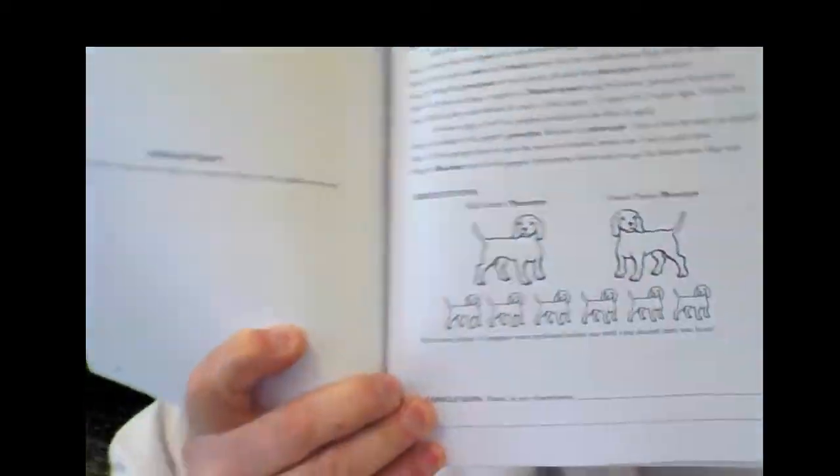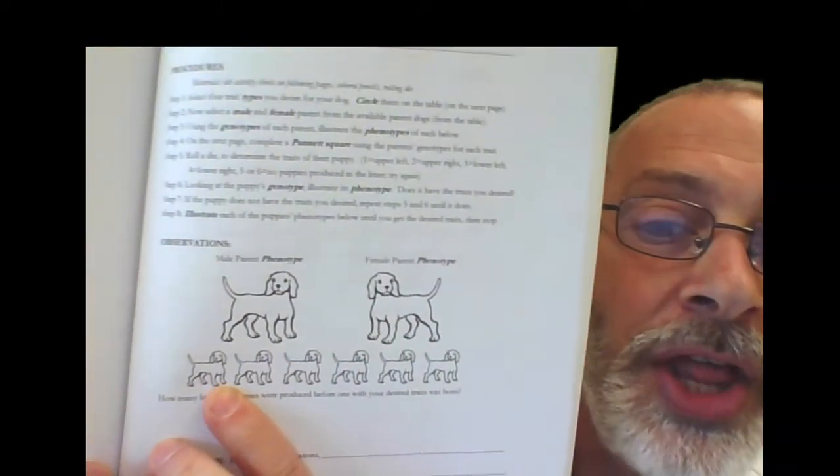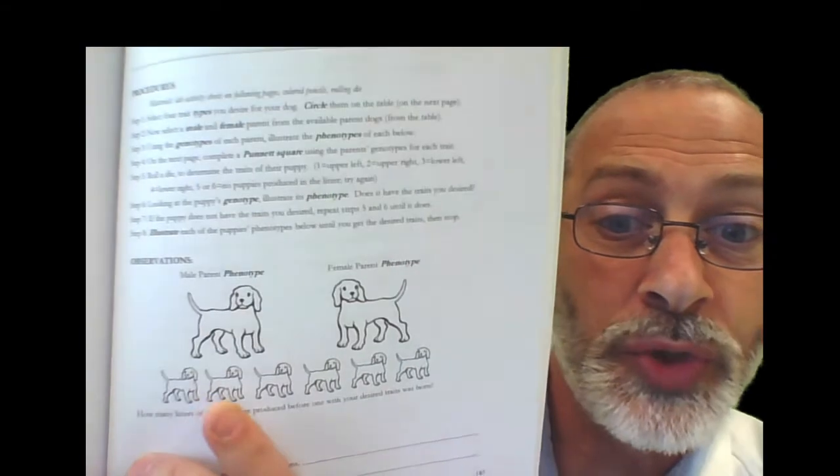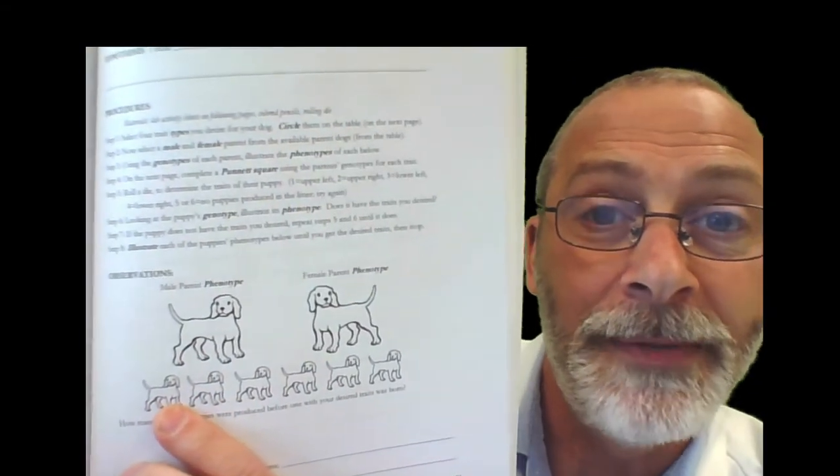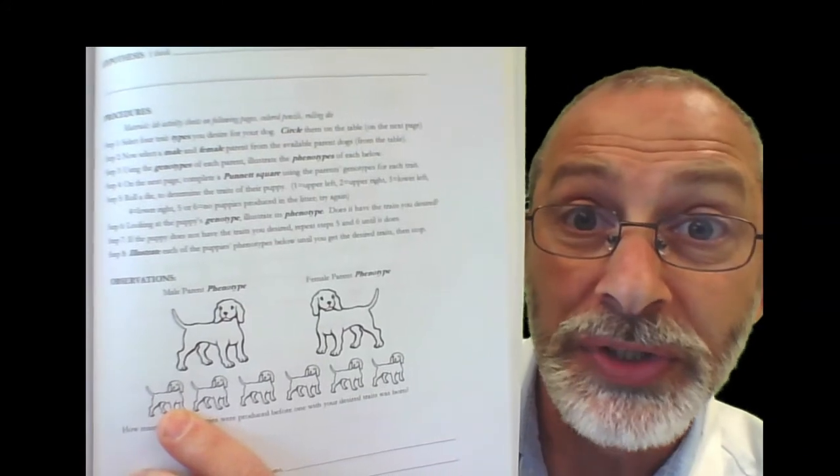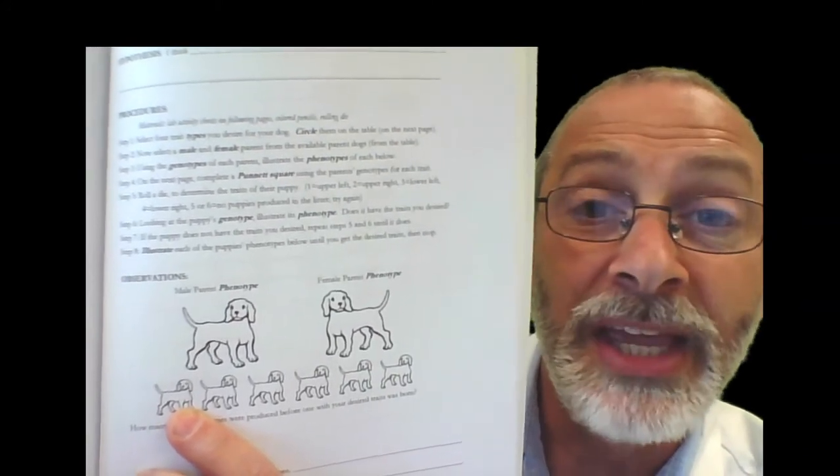So essentially what you're going to be doing is this. You're going to be completing each of the four Punnett squares. Then you're going to be illustrating the four phenotypes from those Punnett squares on the first puppy. If it looks like the puppy you circled with the traits on top of the next page, then you're done. If not, then go back to the Punnett squares.